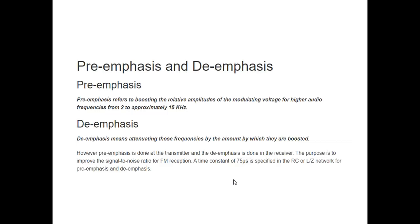The next topic is pre-emphasis and de-emphasis, which is used in FM systems. Pre-emphasis refers to boosting the relative amplitude of the modulating voltage for the higher audio frequencies from 2 to approximately 15 kHz. The reverse process, de-emphasis, means attenuating those frequencies by the same amount by which they were boosted, at the detector side. Pre-emphasis is done at the transmitter and de-emphasis is done at the receiver. The purpose is to improve the SNR of FM reception. A time constant of 75 microseconds is specified for the RC or LZ network used for pre-emphasis and de-emphasis.